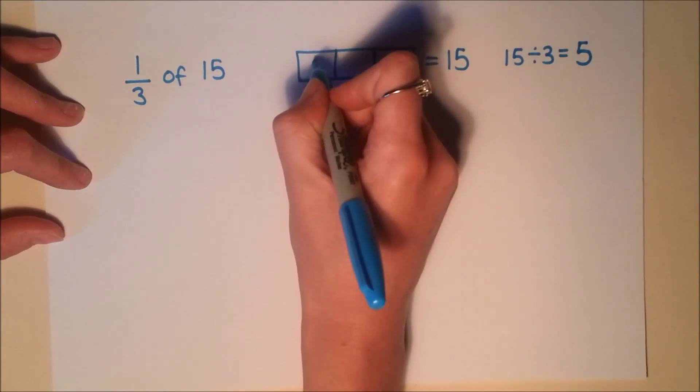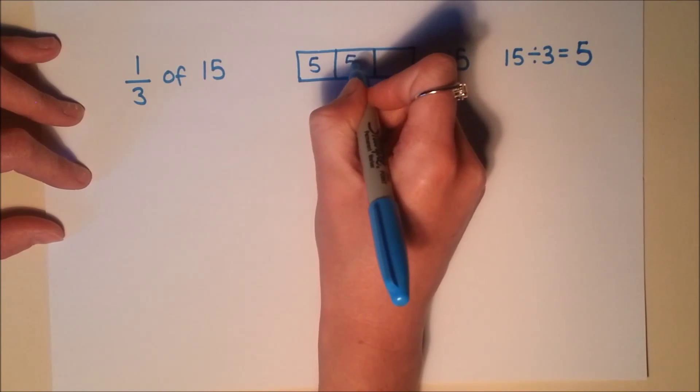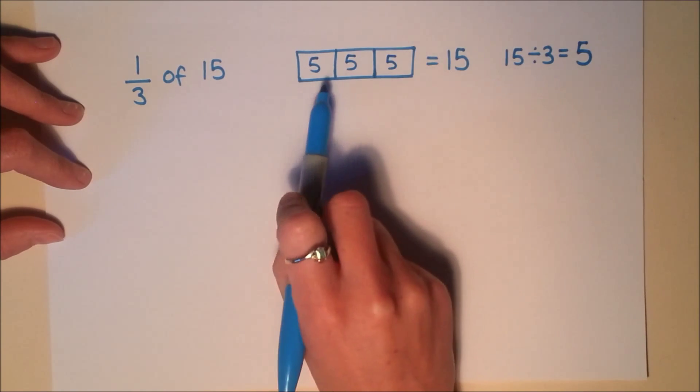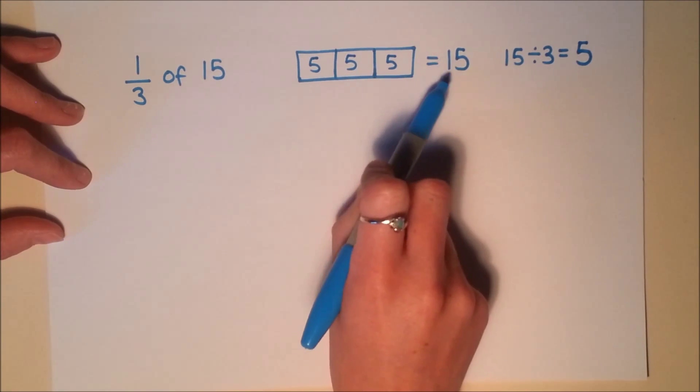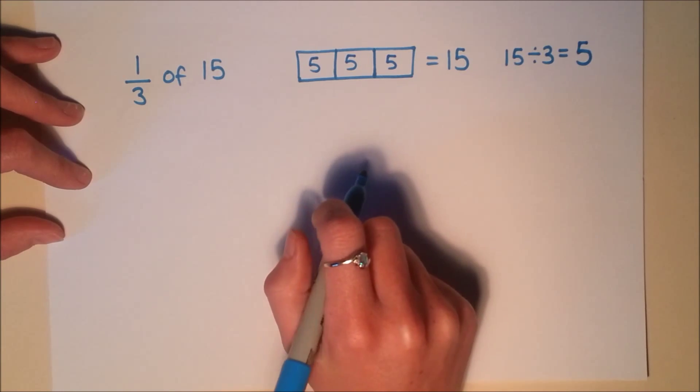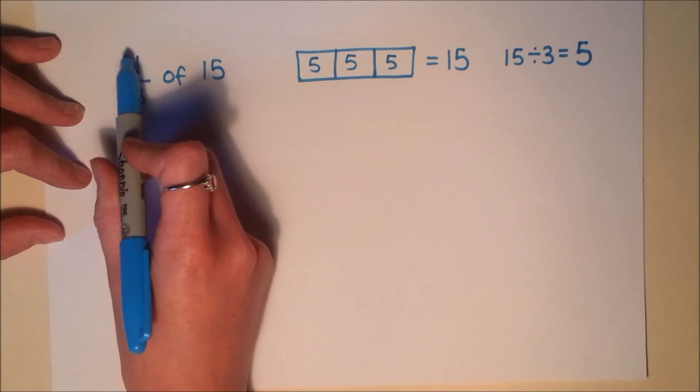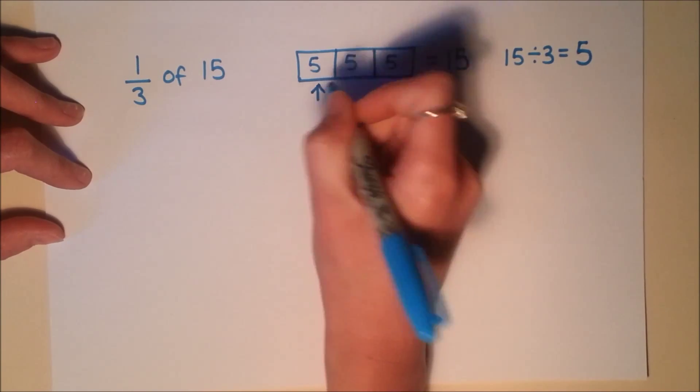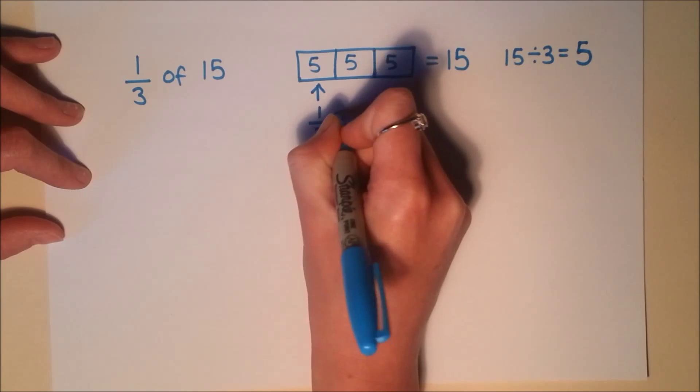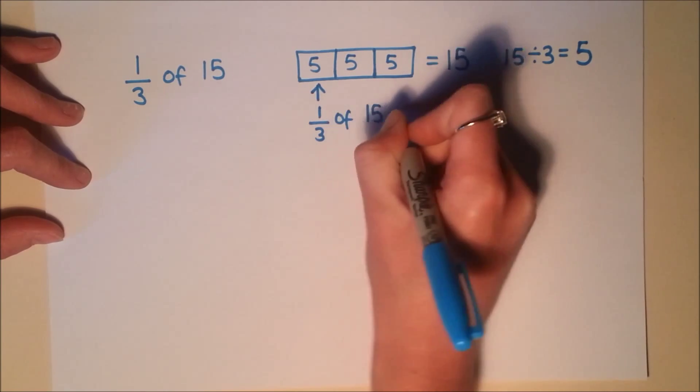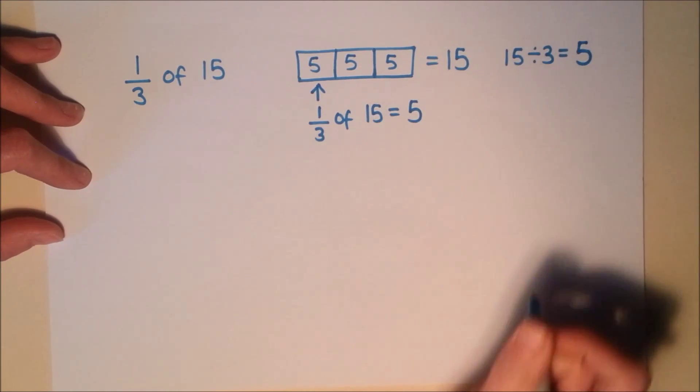So it's going to be 5 for each one of these pieces. You can see here, we've got 3 lots of 5 there making the full amount of 15. Now we want 1 third of 15, so we want one portion of this bar. It's just one of these here. So 1 third of 15 is 5.